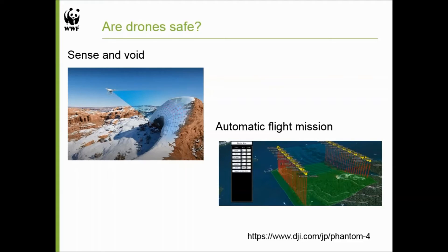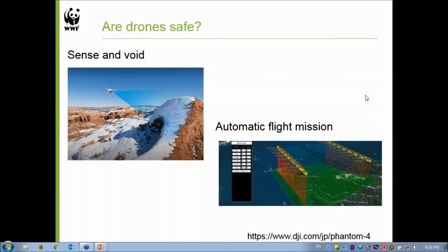Are drones safe? Many people ask me that. Actually, drones are pretty safe right now. Two years ago they were not so stable, but now they have special sensors to avoid objects, so they can automatically avoid obstacles and not crash. There is also automatic flight mission software available to plan your flight before you fly — you set the region and it estimates the flight path automatically. You just push a button and the drone flies by itself. It's pretty much automatic now, so you don't need to fly manually. That is the dramatic development of drone technology.